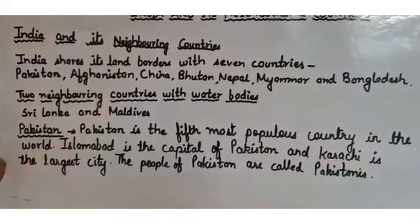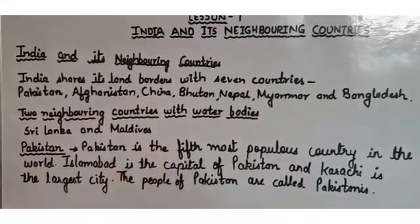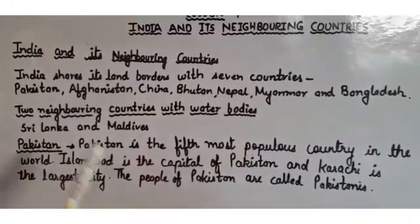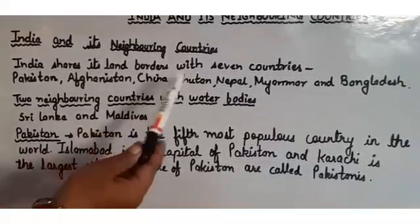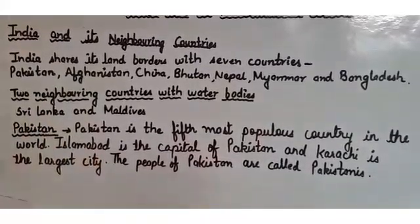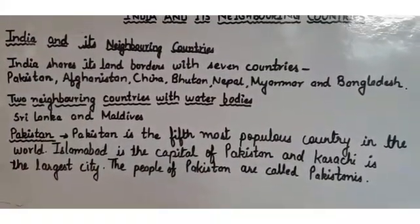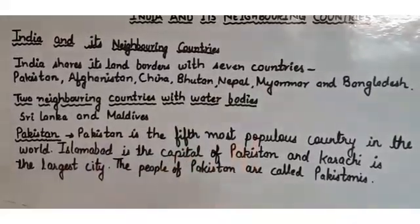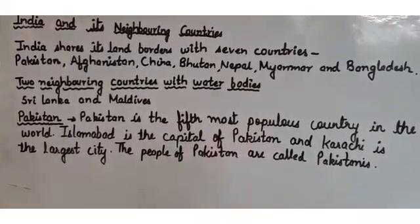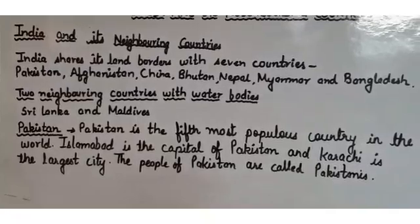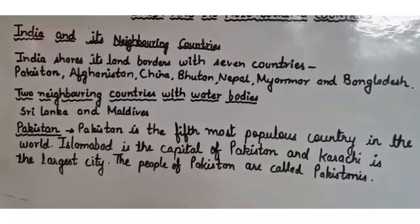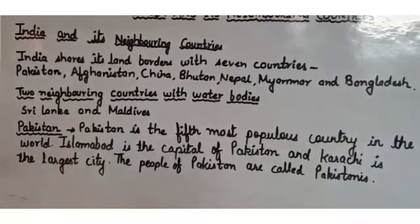India shares its land borders with seven countries: Pakistan, Afghanistan, China, Bhutan, Nepal, Myanmar, and Bangladesh. Pakistan and Afghanistan share borders to the northwest; China, Bhutan, and Nepal to the north; and Myanmar and Bangladesh to the east. There are also two neighboring countries that share water bodies with India — not land borders — and they are Sri Lanka and Maldives.